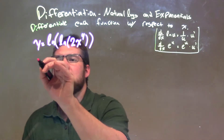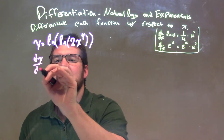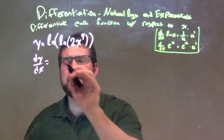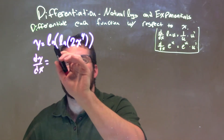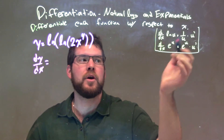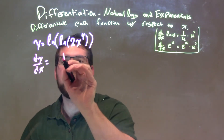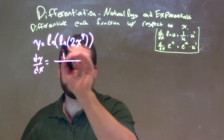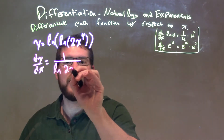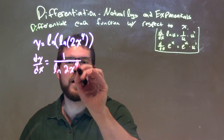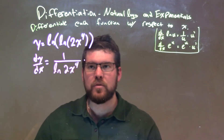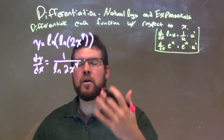We have dy/dx here. The derivative of the natural log is 1 over u — 1 over what's on the inside. So we have 1 over the inside, which is the natural log of 2x to the fourth power, times the derivative of the inside.